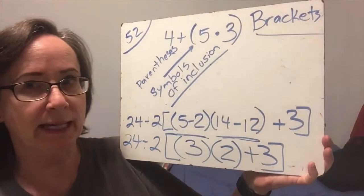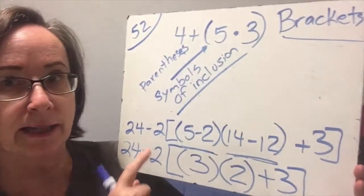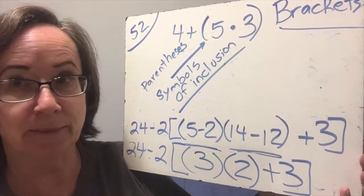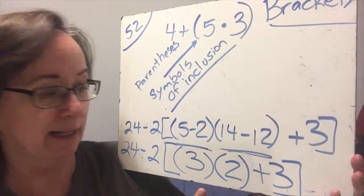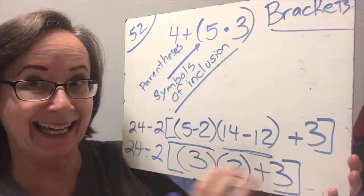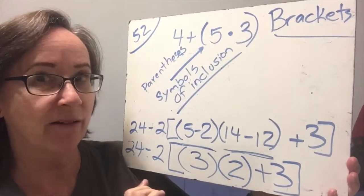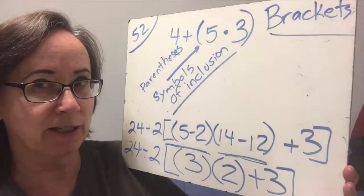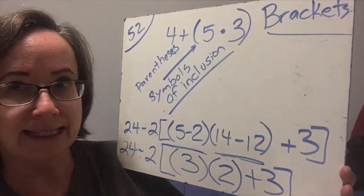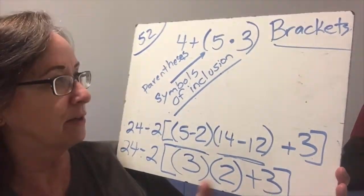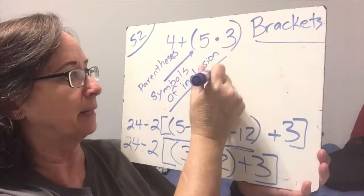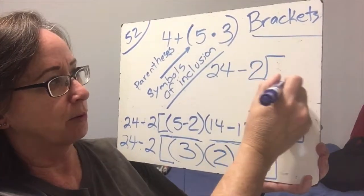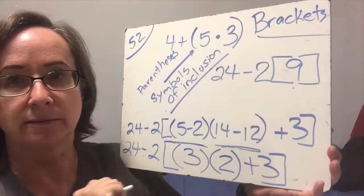One of the biggest mistakes when doing this type of problem is trying to do the 24 minus 2 first. That's a big mistake. We always start with the bracket, the symbol of inclusion, and we start working it inside here first, and then we move out from there. So we have 3 times 2 is 6, and 6 plus 3 is 9. So inside my big bracket, I have 9. So now let's take this and simplify it up here. 24 minus 2 bracket 9.